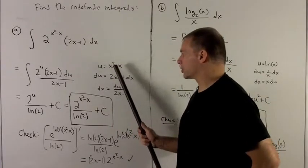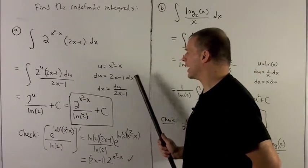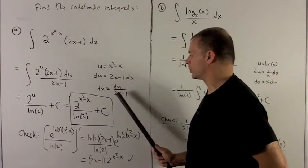We let u be equal to x squared minus x, du is 2x minus 1 dx, and then dx is du over 2x minus 1.